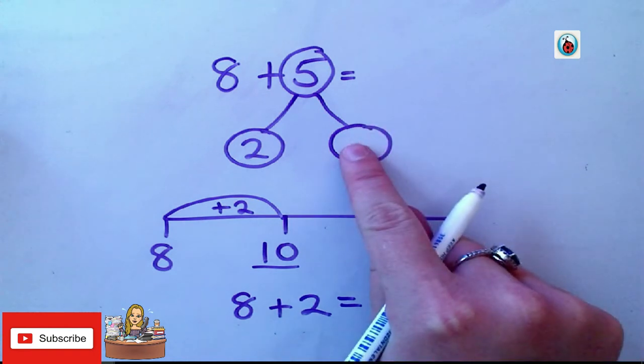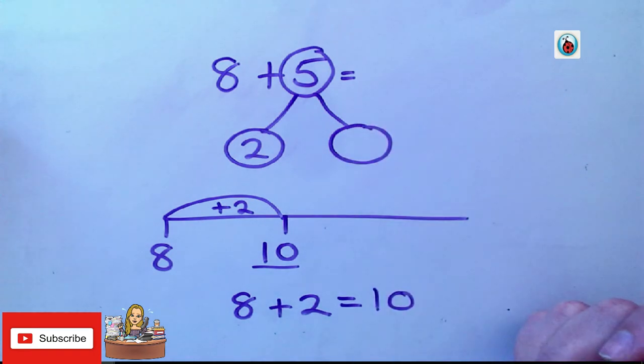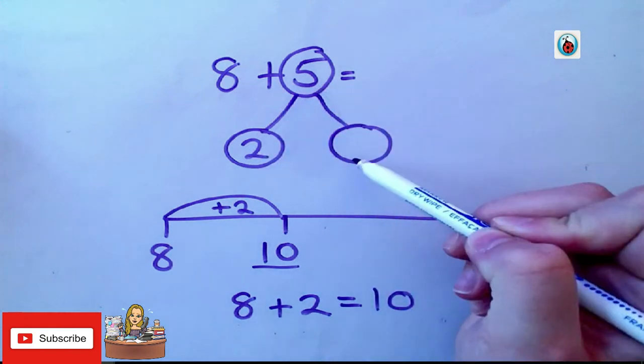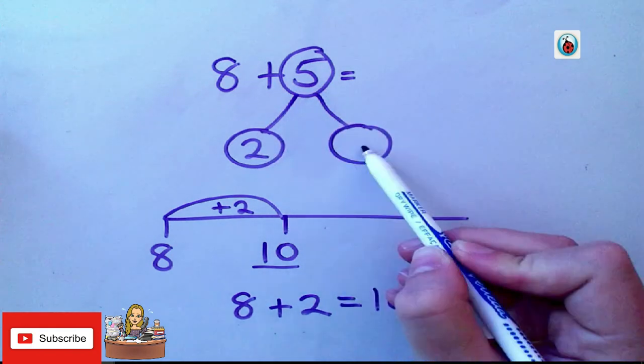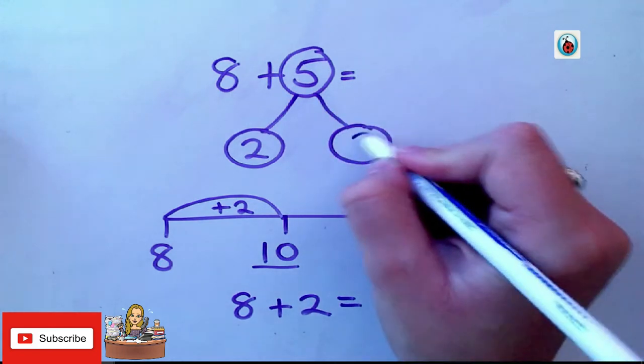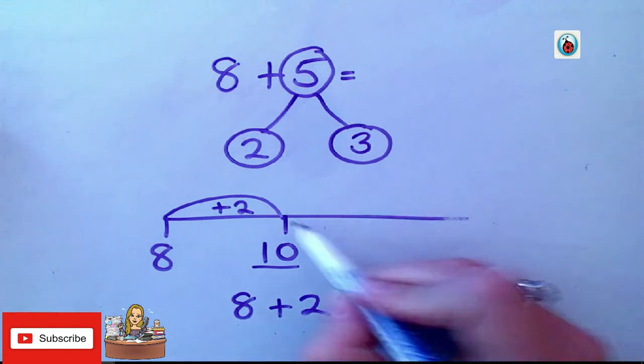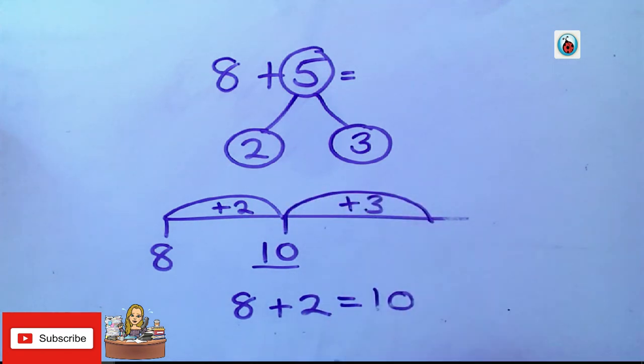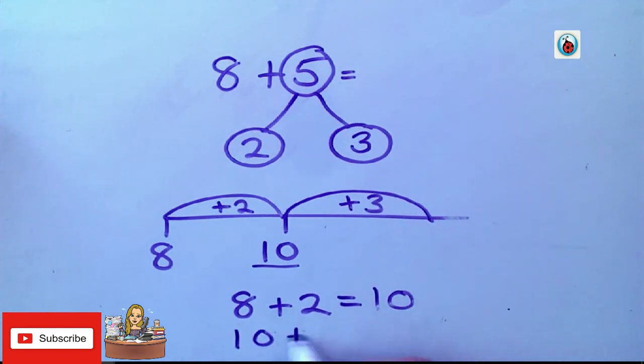Then, what's my other number that I'm going to partition? So, I've partitioned 5 into 2, and what other number? 2 add something is 5. What's my other number? 3. Well done. So, now, I can add the remainder of 3 onto my number line. So, now, I'm going to do 10 add 3. So, what's 10 add 3?